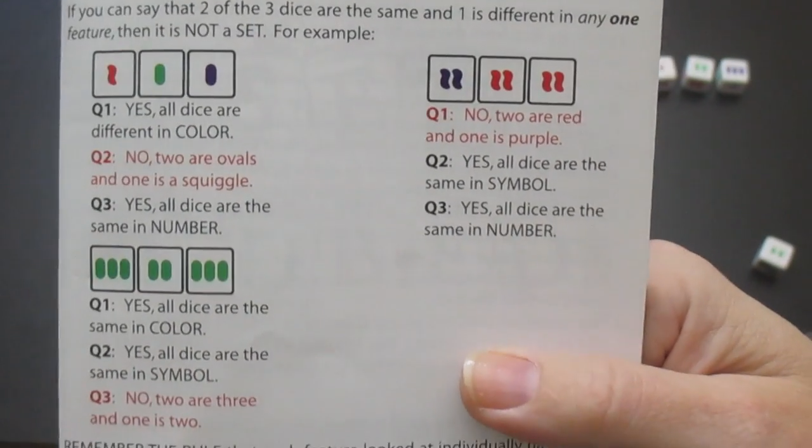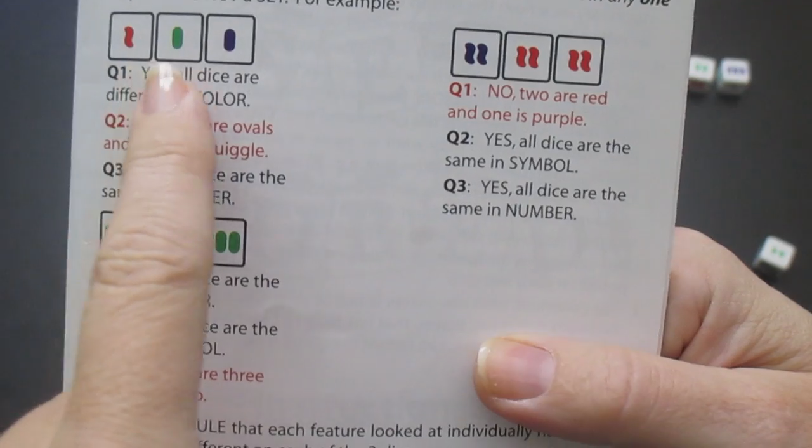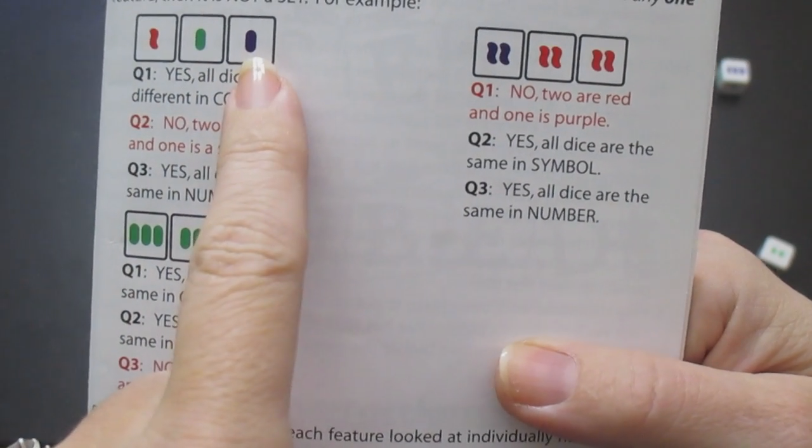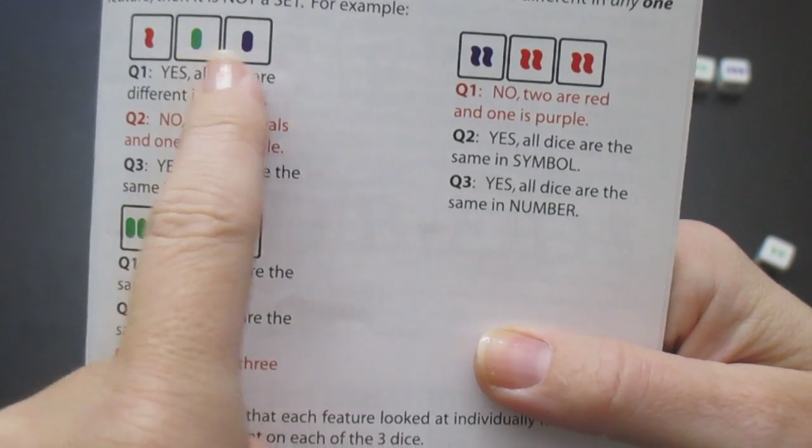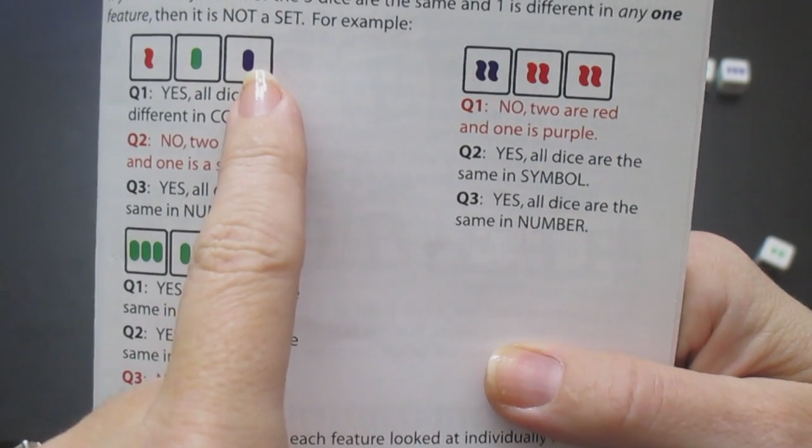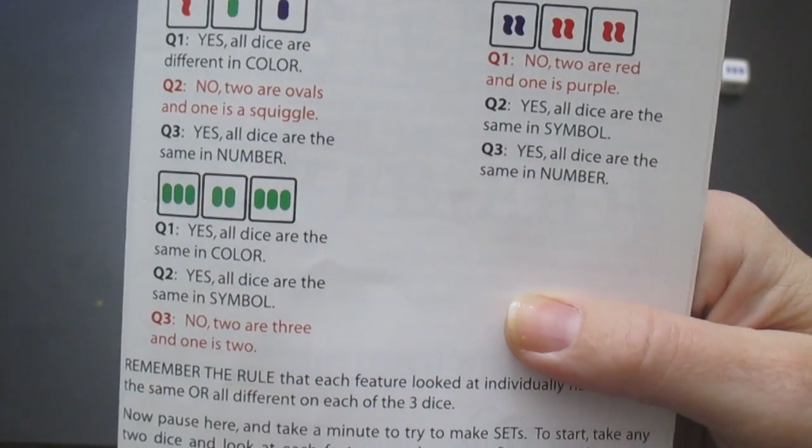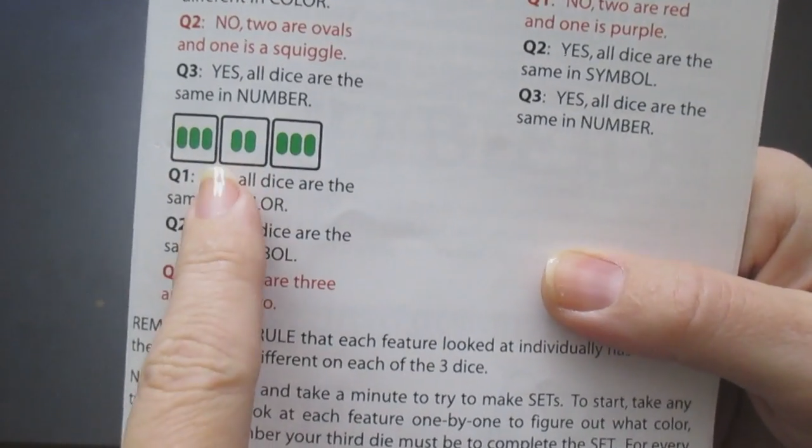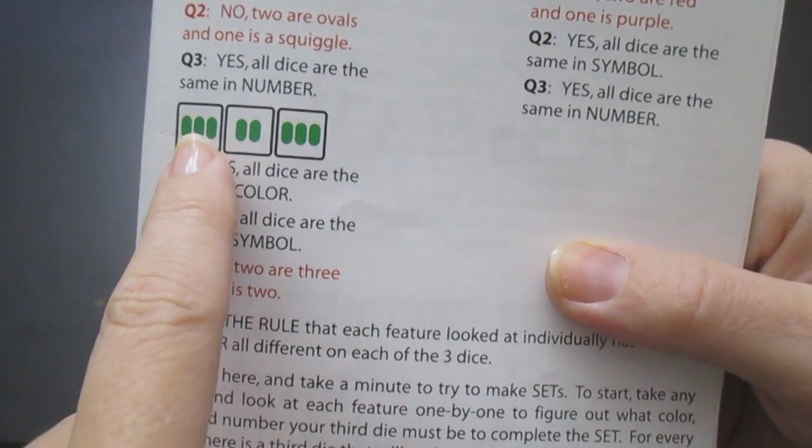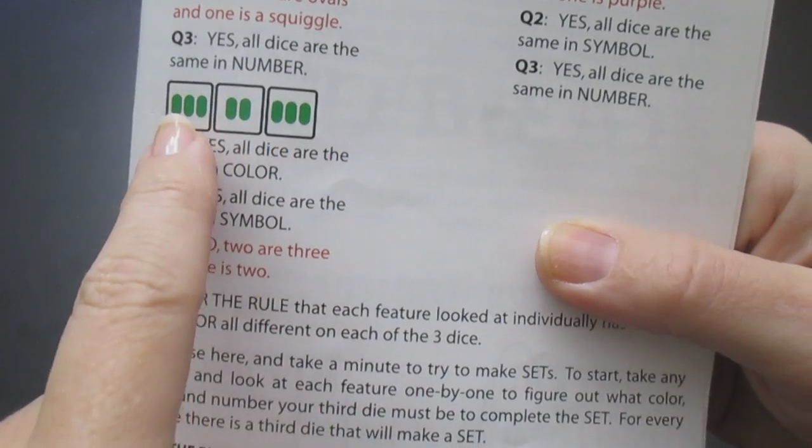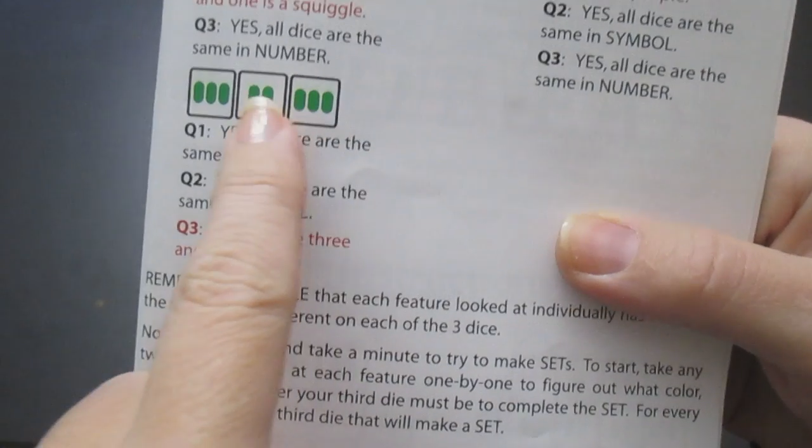Some things that do not make a set: if you notice this one, it is a red, it's a green, and it's a purple, so it does use three different colors. However, two of the shapes are exactly the same. You can't have that. You have to have three different shapes. The same is true with this example. You have all the same color, which is right, but you have the same number of elements. So there's three here and three here. You can't have that. You need to have a one, two, and a three.